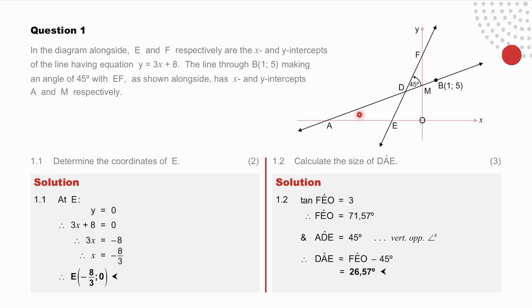Angle DAE. The exterior angle of triangle DAE is equal to angle DAE plus 45 degrees. And this exterior angle of the triangle is also the angle of inclination of line EF with the equation y equals 3x plus 8. The gradient of which is therefore equal to 3. Therefore the tan of FEO is equal to 3 and we can calculate its value. Therefore our angle DAE is equal to angle FEO subtract 45 degrees. Check your answer.